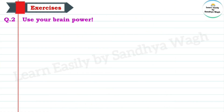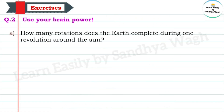Question 2 - Use your brain power. A: How many rotations does the Earth complete during one revolution around the sun?